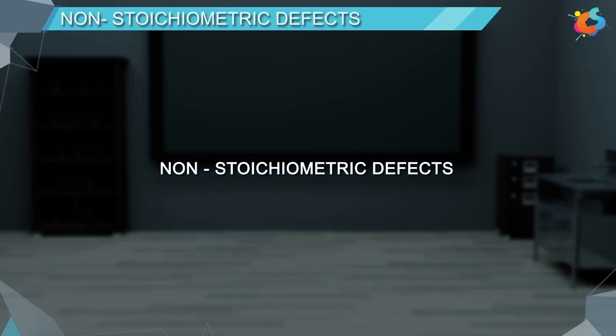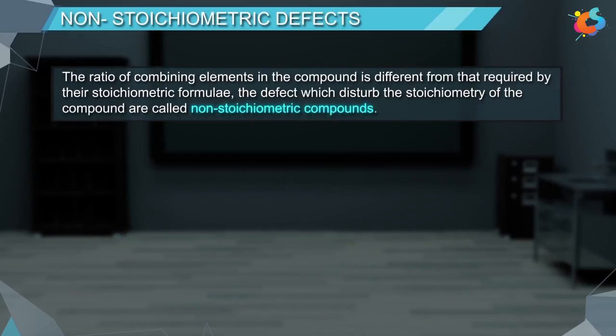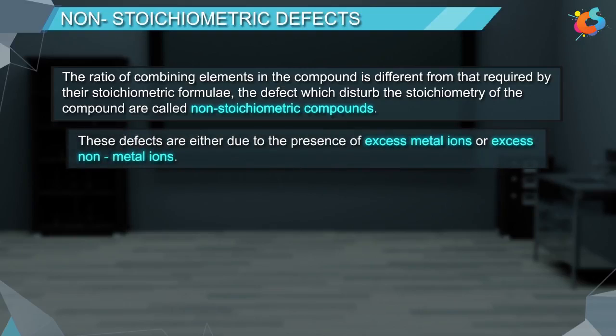Non-stoichiometric defects. The ratio of combining elements in the compound is different from that required by the stoichiometric formulae. The defects which disturb the stoichiometry of the compound are called non-stoichiometric compounds. These defects are either due to the presence of excess metal ions or excess non-metal ions.